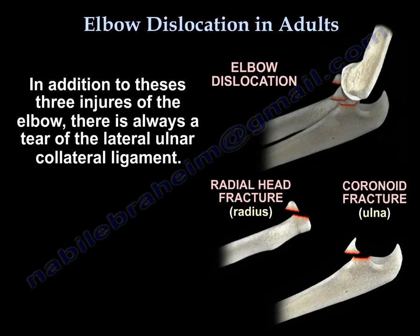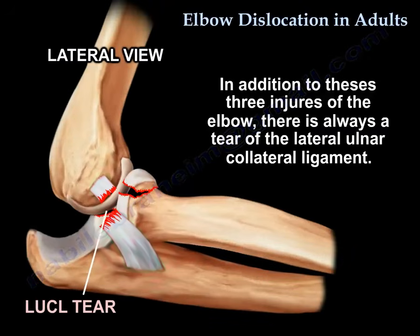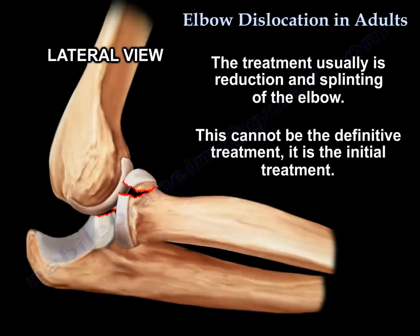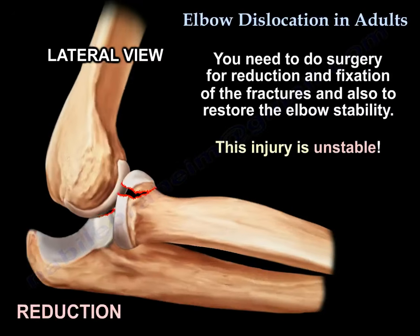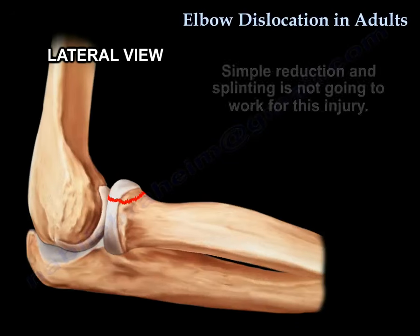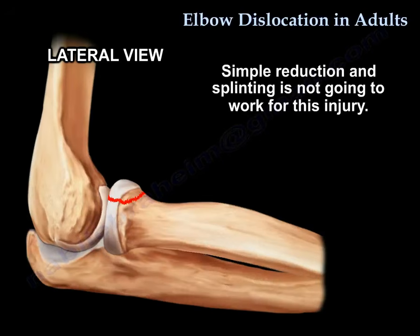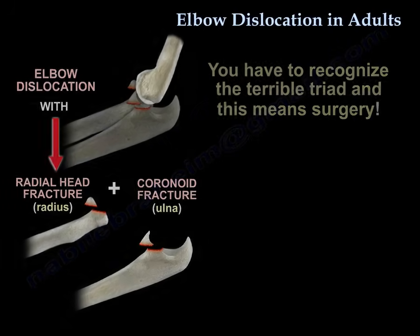In addition to all three injuries, there is always a tear of the lateral ulnar collateral ligament. The initial treatment is reduction and splinting of the elbow, but that cannot be the definitive treatment. Without surgery, you will have recurrent dislocation. Surgery is required for reduction and fixation of the fractures and to restore elbow stability. This injury is unstable — simple reduction and splinting will not work. You must recognize the terrible triad, and it means surgery.